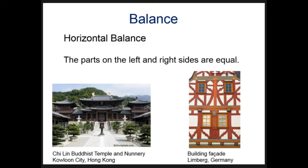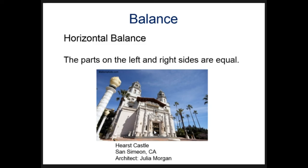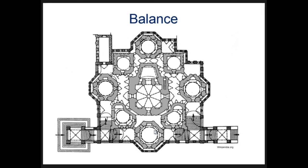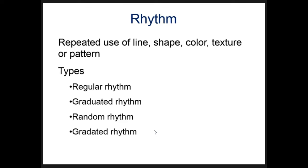Compare that to horizontal balance, where the left half and the right half are equal. Here the line of symmetry is vertical, but we call it horizontal balance because this side is the same as that side horizontally. Here's another example where the left and right sides are equal. We can also see this in floor plans — how many types of symmetry do you see? There are quite a few here.